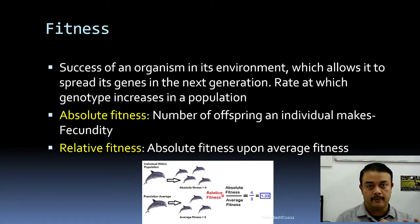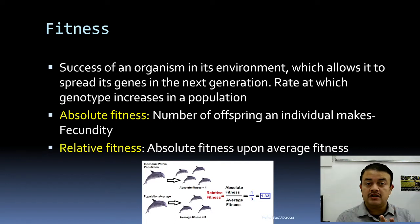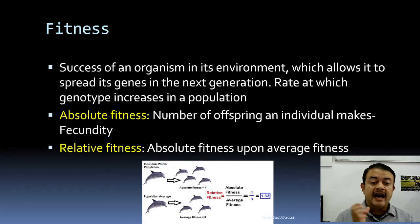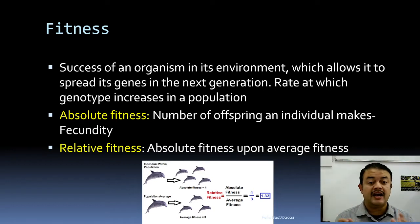Fitness allows an organism to contribute to the next generation. There are two kinds: absolute fitness and relative fitness. Absolute fitness is simply the number of offspring an individual produces — also known as fecundity. If you have two children, your absolute fitness is two. Relative fitness is absolute fitness divided by the average fitness of that species.